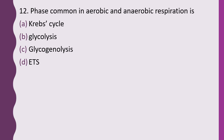Question 12. The phase common in aerobic and anaerobic respiration is: Krebs cycle, glycolysis, glycogenolysis, or electron transport system. The correct answer is option B — glycolysis is the common phase.